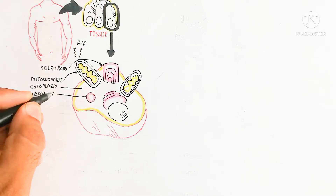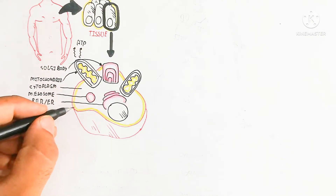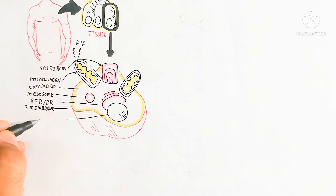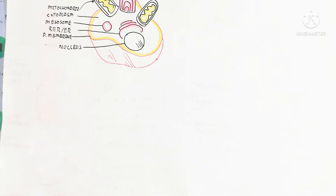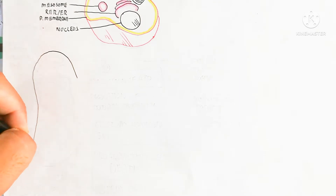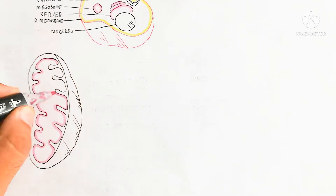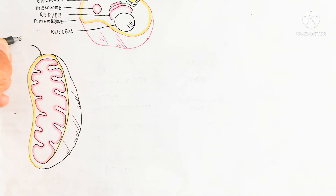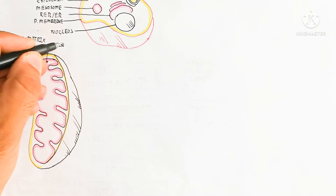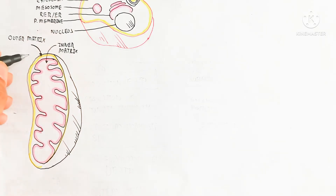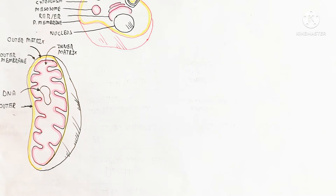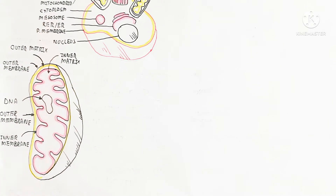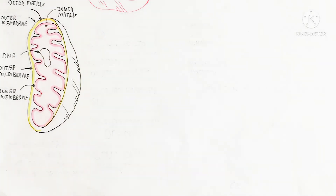The cell structure contains Golgi bodies, mitochondria, cytoplasm, nucleus, rough endoplasmic reticulum, and smooth endoplasmic reticulum — rough means it contains ribosomes. A mitochondria contains a double membrane: the outer mitochondrial membrane and inner mitochondrial membrane, which separate the outer and inner mitochondrial matrix. The inner mitochondrial matrix contains circular DNA, which is why it can self-replicate.